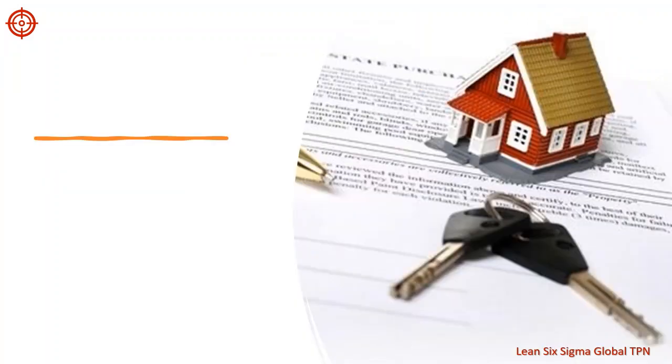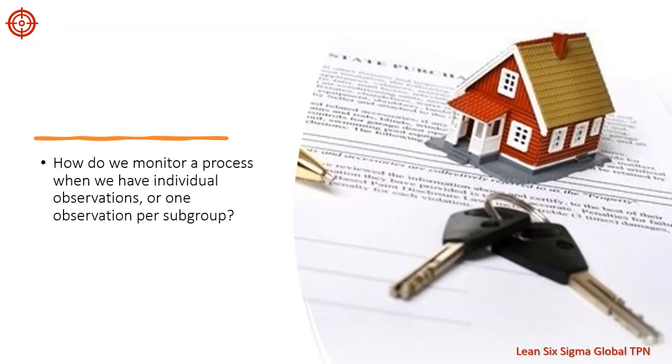Here, real estate contracts are not necessarily drawn up within a predetermined schedule because each contract depends on when a potential buyer puts a bid on a house. As a result, there is only one observation per subgroup, the length of time it takes to complete a real estate contract. So how do we monitor a process when we have individual observations or one observation per subgroup?